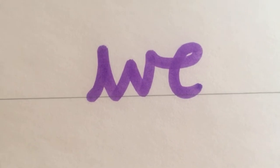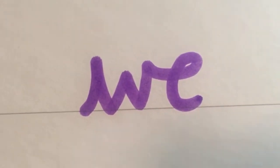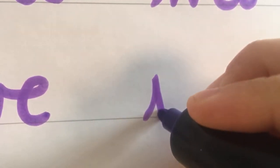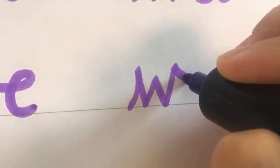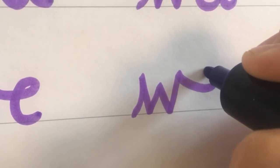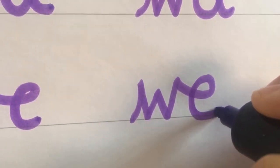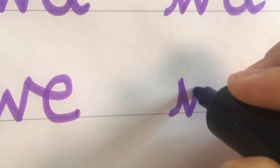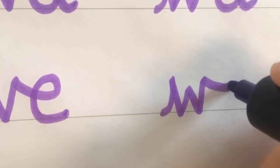The next letter join that we're going to focus on is a W into an E. So again I start on the line for W, flick out and down, up and around for the E. Do that again. There we go.